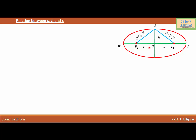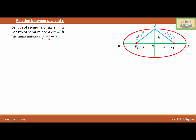We can use the Pythagorean theorem to find the value of AF1 and AF2, and both are the same length, which is square root of B squared plus C squared. The length of the semi-major axis is A, the length of the semi-minor axis is B, and the distance between the foci is equal to 2C.